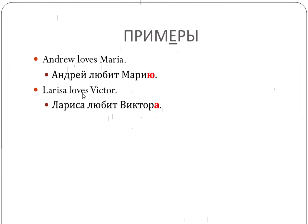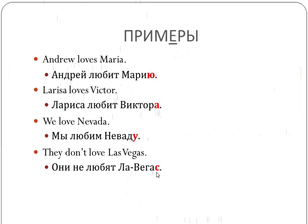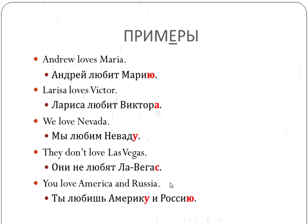Larissa loves Victor: Лариса любит Виктора. Hopefully you're recognizing the genitive case ending here, because masculine animate nouns in the accusative case use genitive case endings — so Виктора. We love Nevada: Мы любим Неваду. They don't love Las Vegas: Они не любят Лас-Вегас — no change here, this is not a person, it's a masculine inanimate noun. You love America and Russia: Ты любишь Америку и Россию.